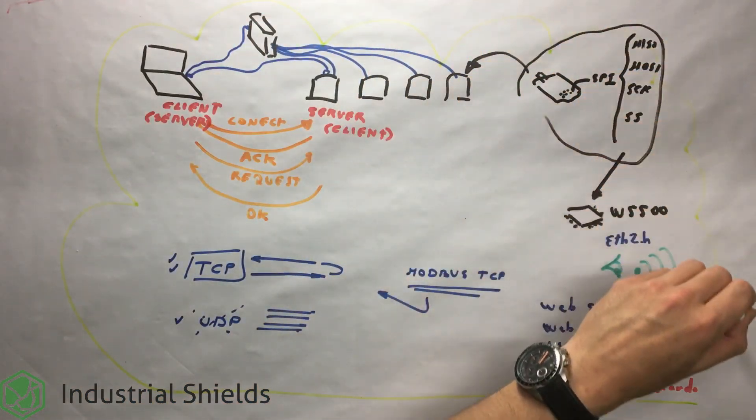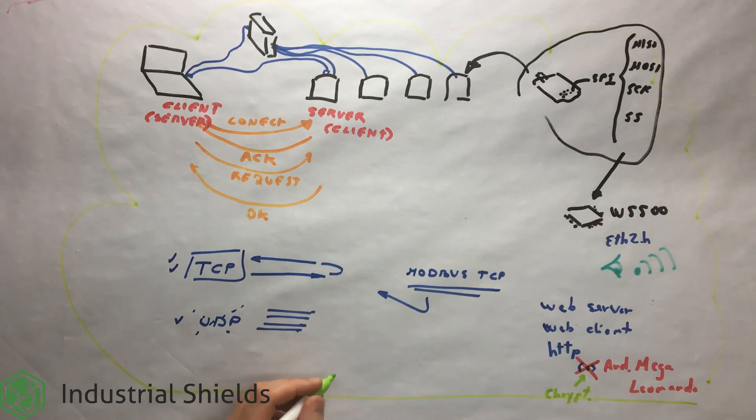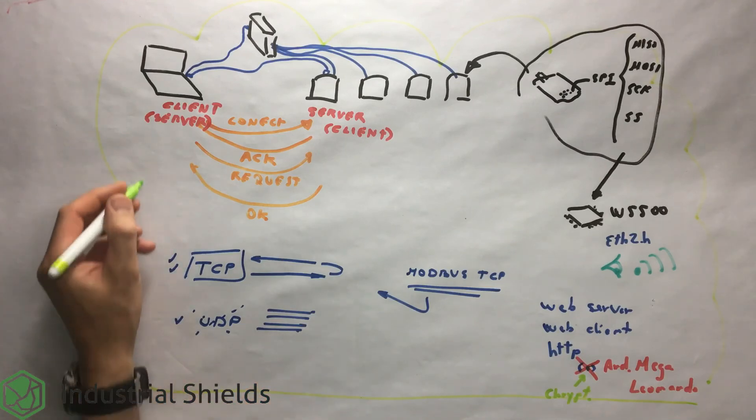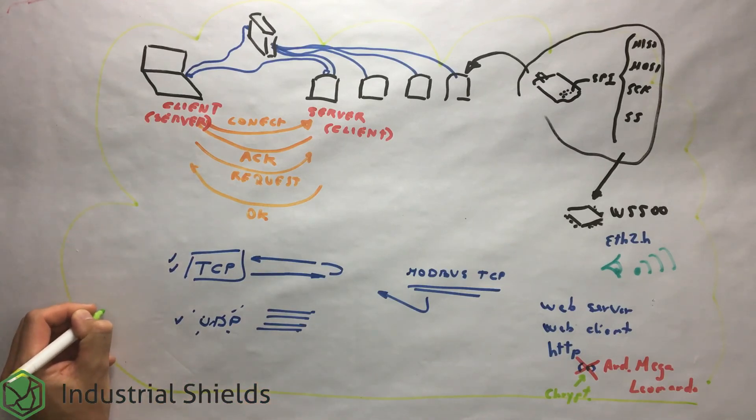Because Ethernet chip is working through SPI, it is also possible to add Ethernet communication to any PLC with SPI communication portable level, as the ARBOX family.